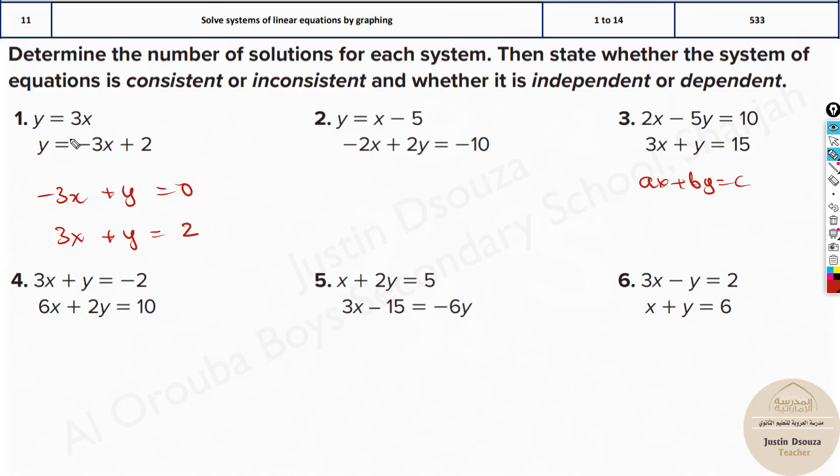Now, if you're thinking can't I take Y to the other side? Yes, you can. Then it will be positive 3x minus Y. If both the signs will be changed, that's fine. You will get the same answer. You can try that.